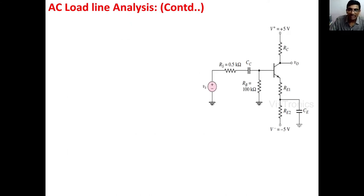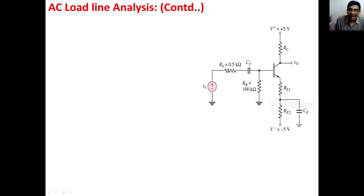To find the AC load line, we take a CE amplifier circuit. We have already derived the equations for DC load line analysis, and now we are going to get the AC load line equations. In this CE amplifier, Vs and Rs form the signal source with its source resistance. Cc is the coupling capacitor, Rb is the biasing resistor, which may equal R1 parallel R2 for a self-bias configuration, and Rc is the collector resistance.